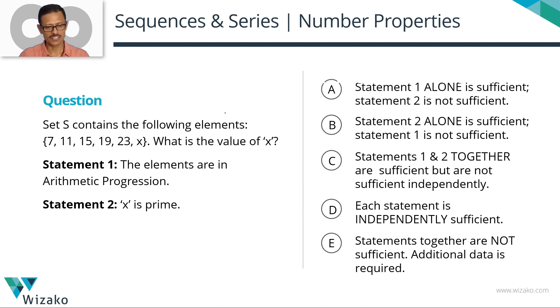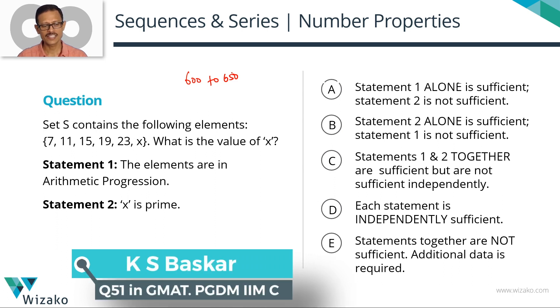This is an easy GMAT data sufficiency question. I'll classify this one as a 600 to 650 level question from the topic number properties, sequences and series with specific focus on arithmetic progression. Let's get started.